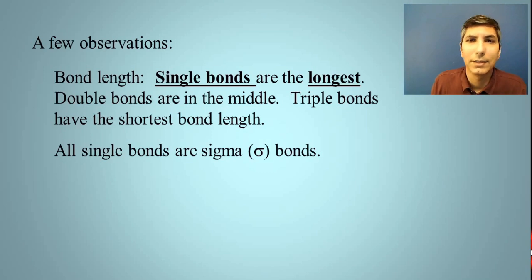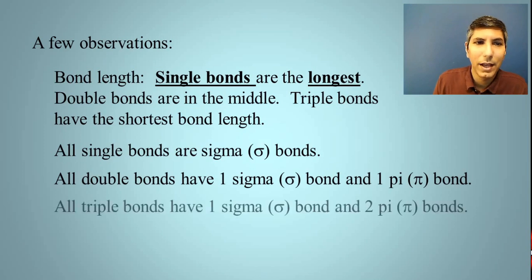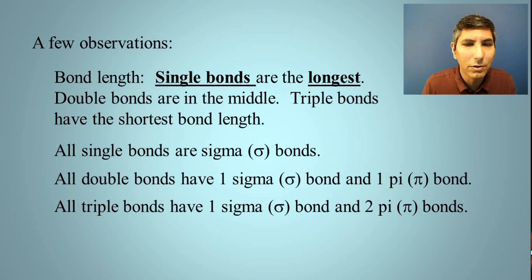Every single bond is a sigma bond. Every double bond has one sigma and one pi bond. And every triple bond has one sigma bond and two pi bonds. Now, with that information right there, you should be able to count up the number of sigma and pi bonds in any molecule that anyone could draw for you.